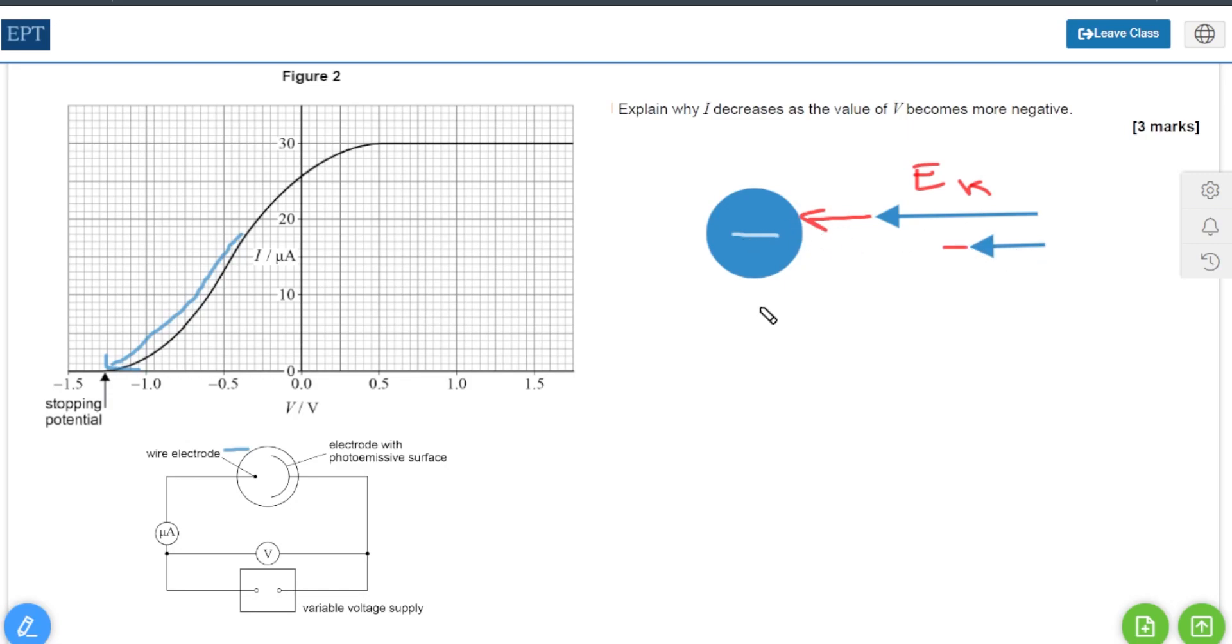The other electron which has less kinetic energy doesn't have enough kinetic energy to overcome the repulsive forces. Therefore it's going to deflect downwards or perhaps even back to where it came from.